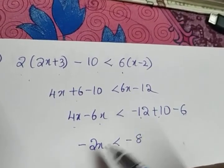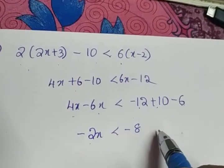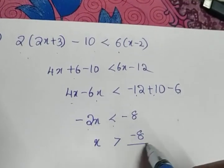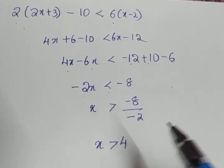So we have to take -2 to the right side. What happens to the inequality? The inequality gets reversed, so x > -8/-2, that is x > 4.